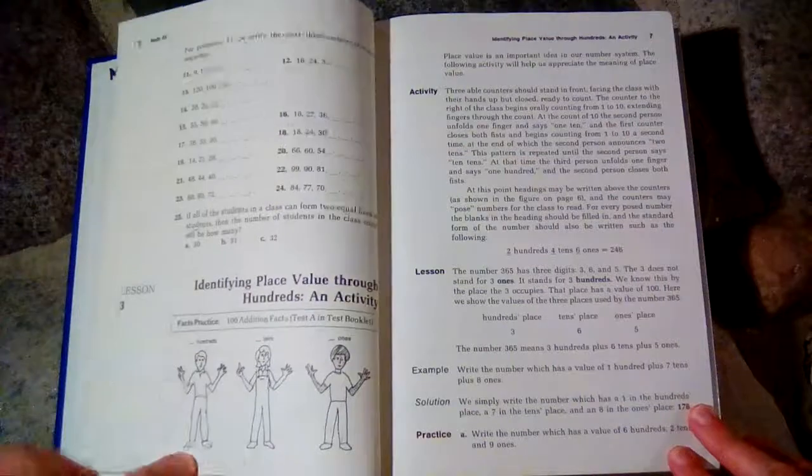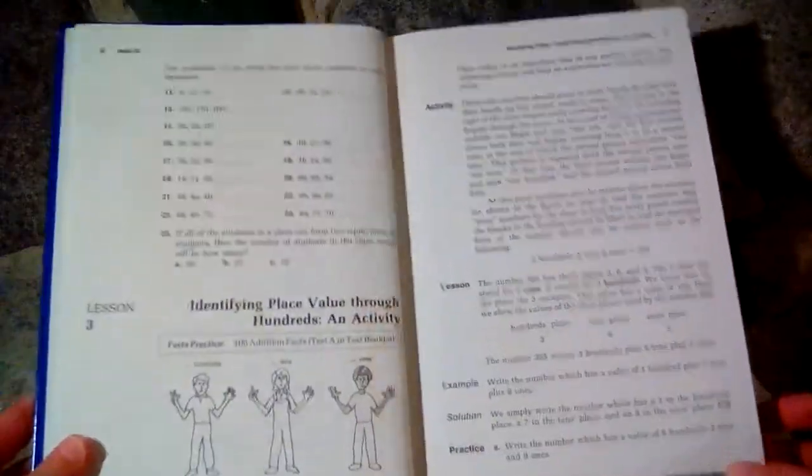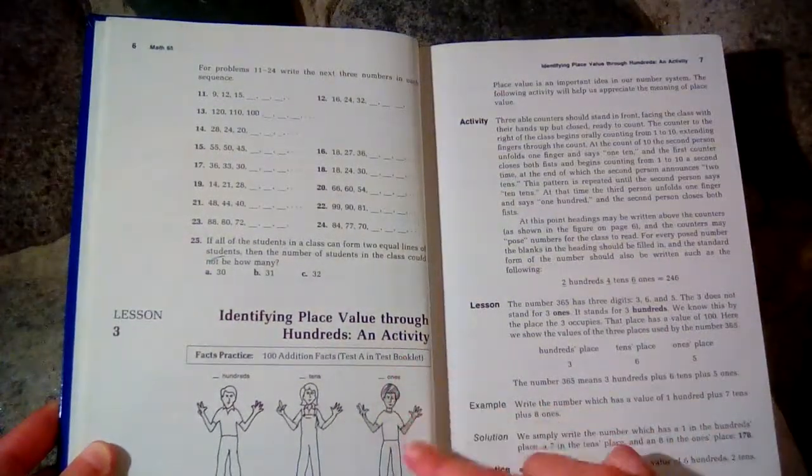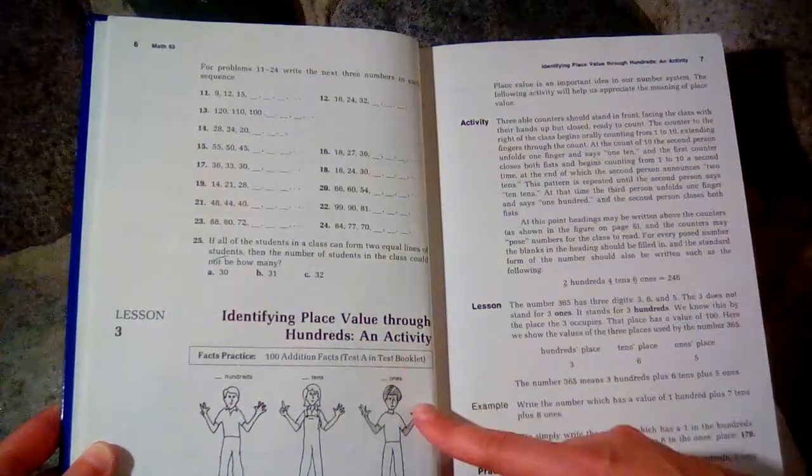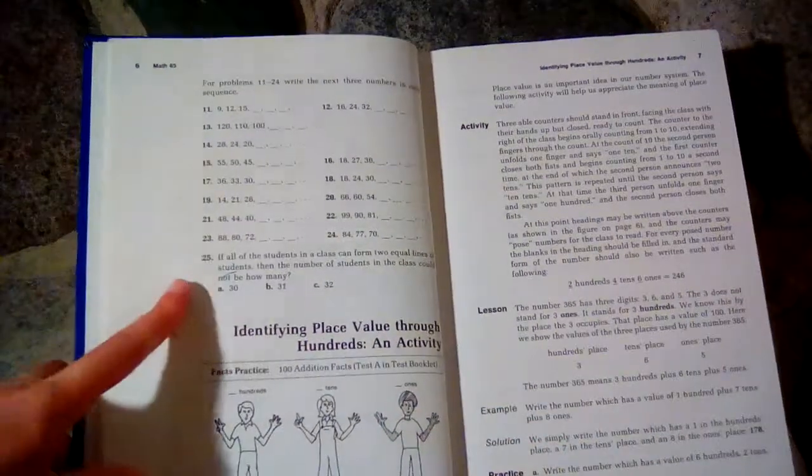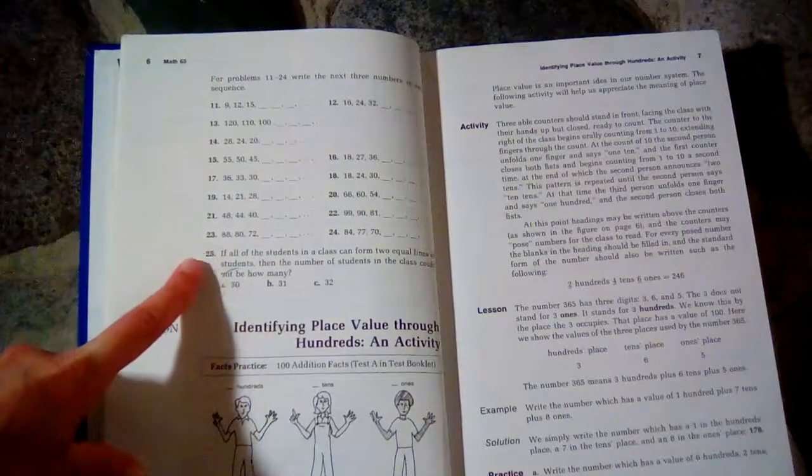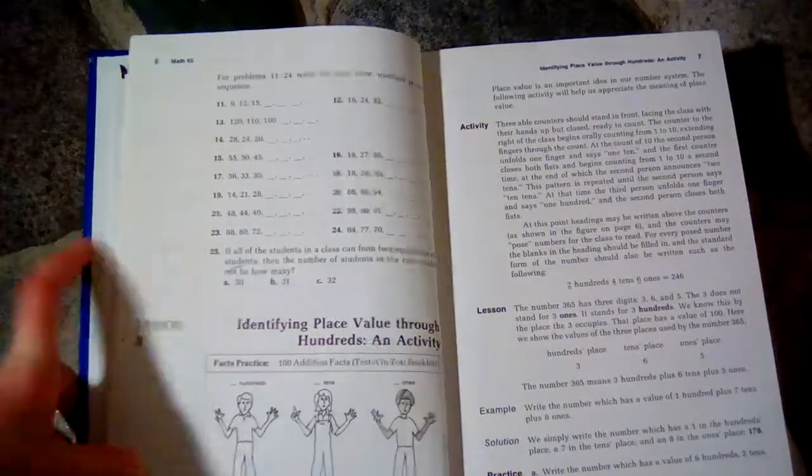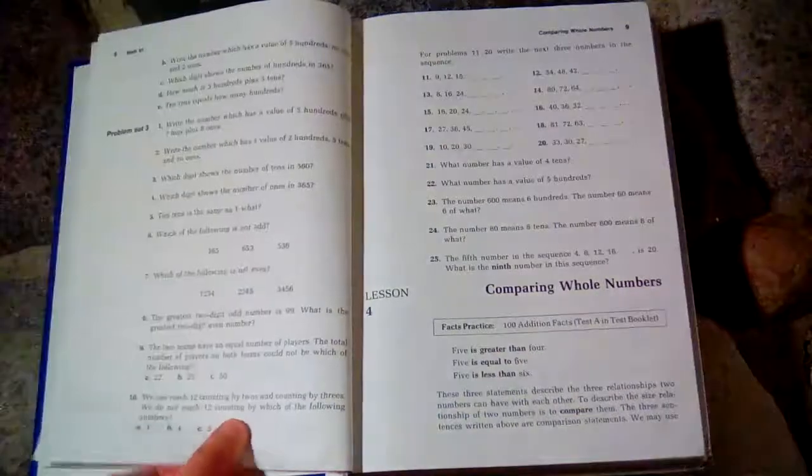We did the second edition last year; this is the first. The only difference I see is that in the second edition, this box is bigger and there's more activities in this box at the beginning of the lesson. Also, the first edition does not have the little parentheses that tell you which lesson to go back to in case you're having trouble with that problem.